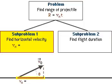The horizontal part of the velocity, v sub x, is equal to the total velocity, v naught, times the cosine of the angle. This technique will become more familiar as you study vectors. We now have the answer to one of our two subproblems.